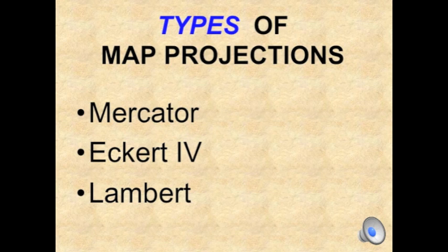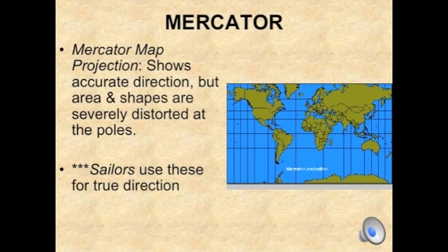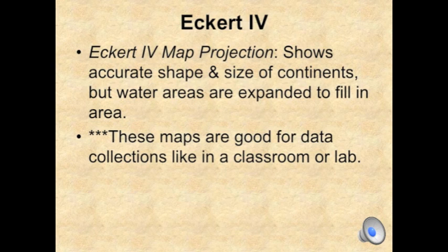There are three types of map projections: Mercator, Eckert-Fohr, and Lambert. Mercator shows accurate direction, but area and shapes are severely distorted at the poles. This was used by sailors for true direction — I believe we have one of those in this room. Eckert-Fohr shows accurate shape and size of the continents, but water and areas are expanded to fill in the area. It's good for data collection, like in a classroom or a lab — I believe that one is in this room as well. Think about how it could help you in a classroom and collecting data.